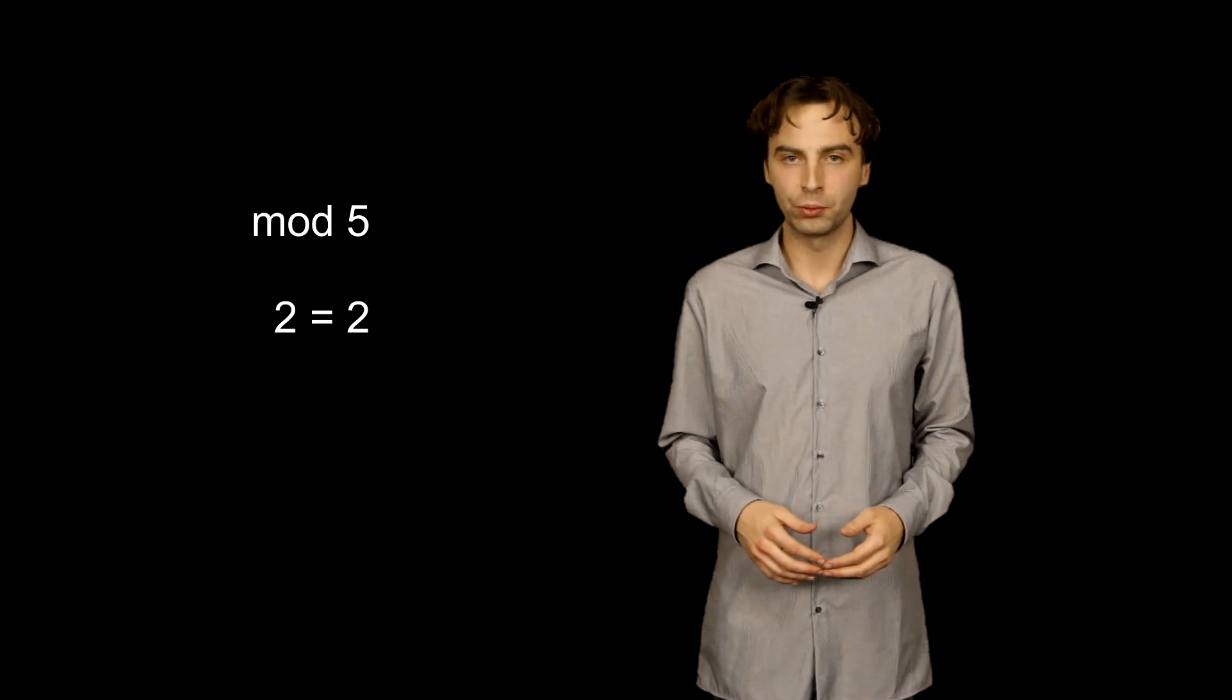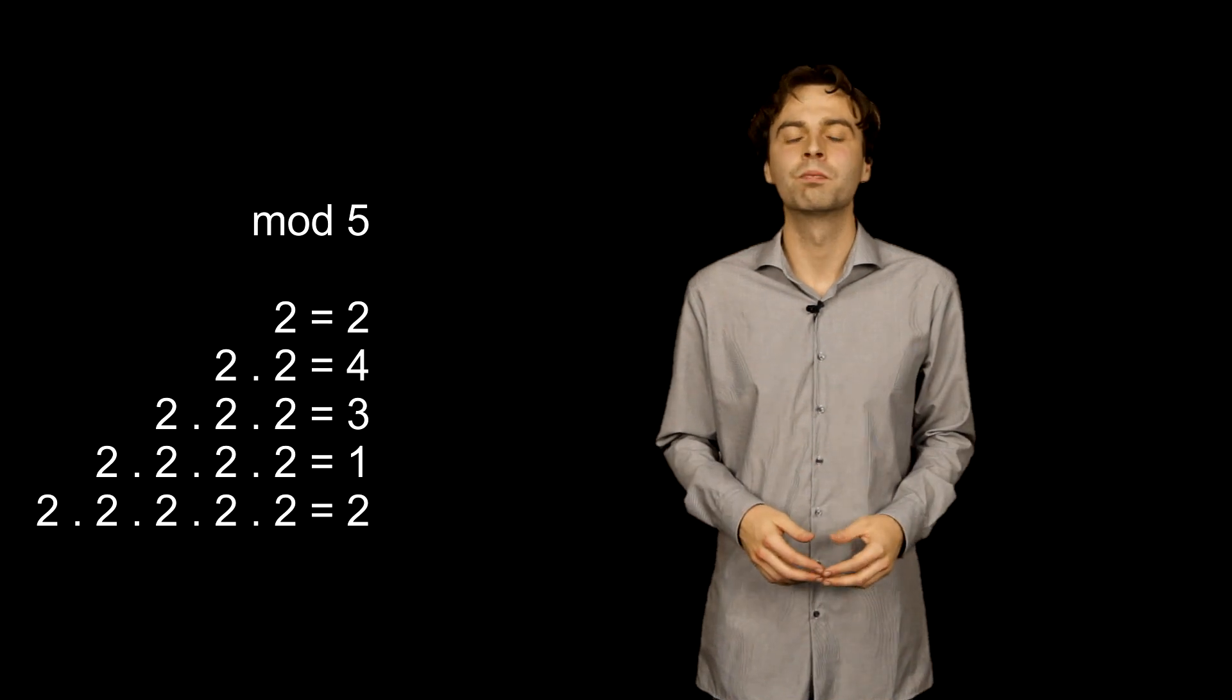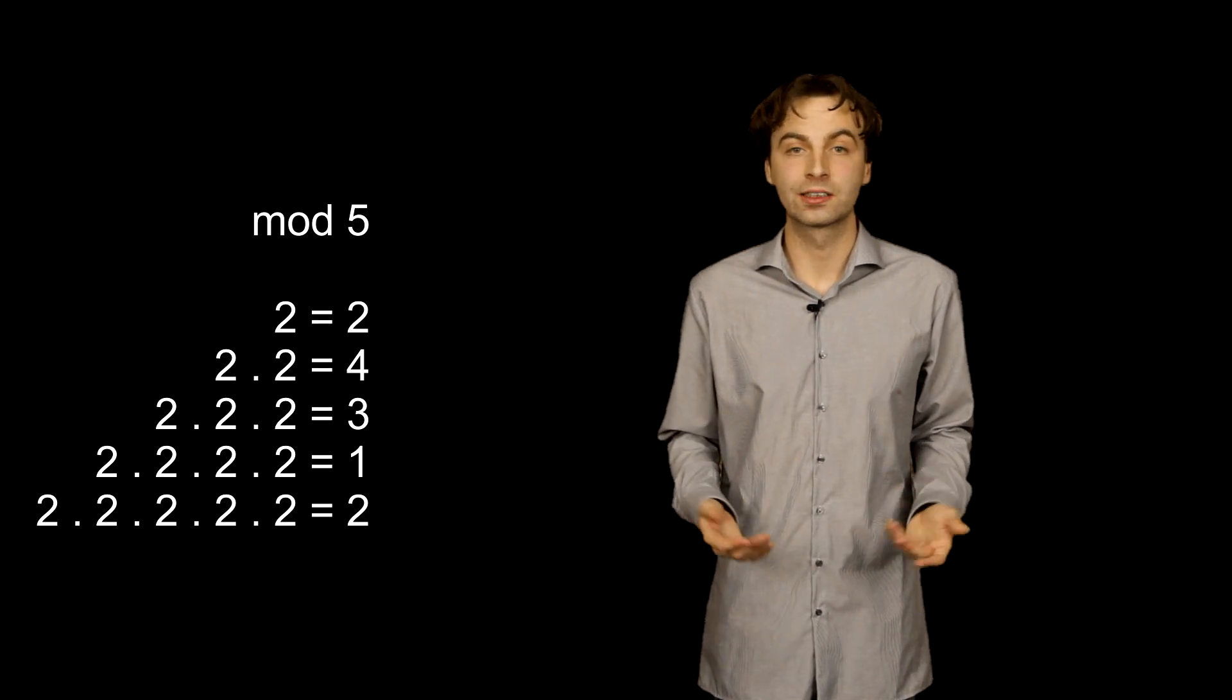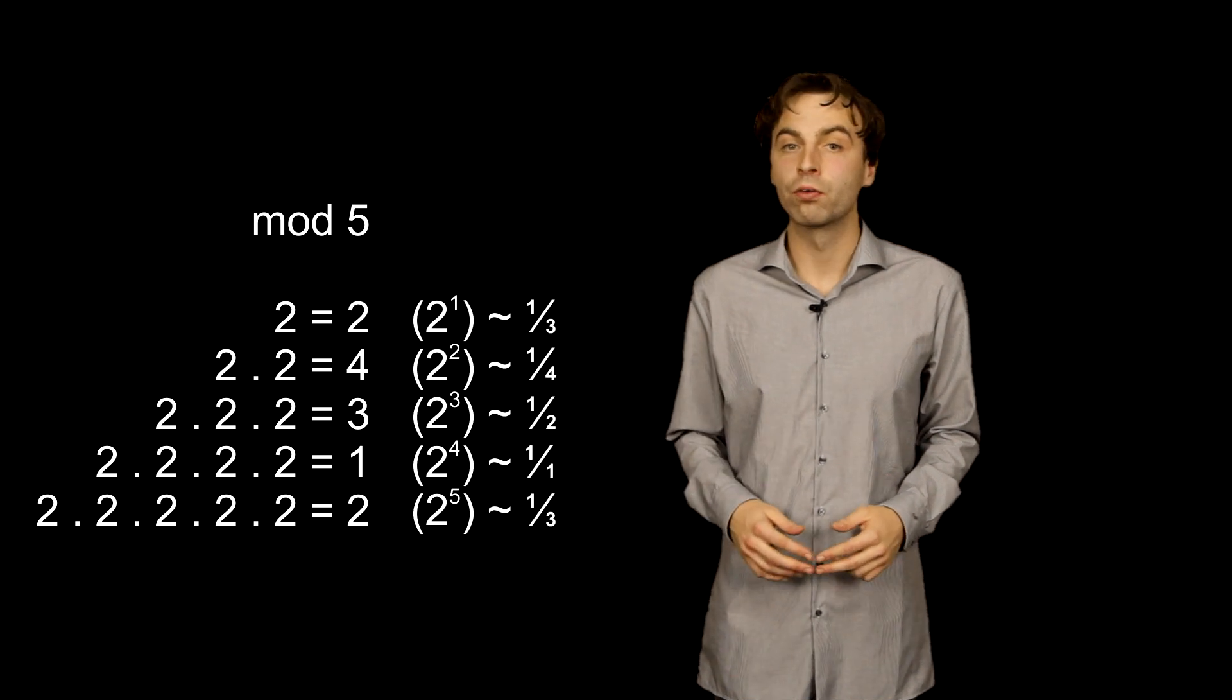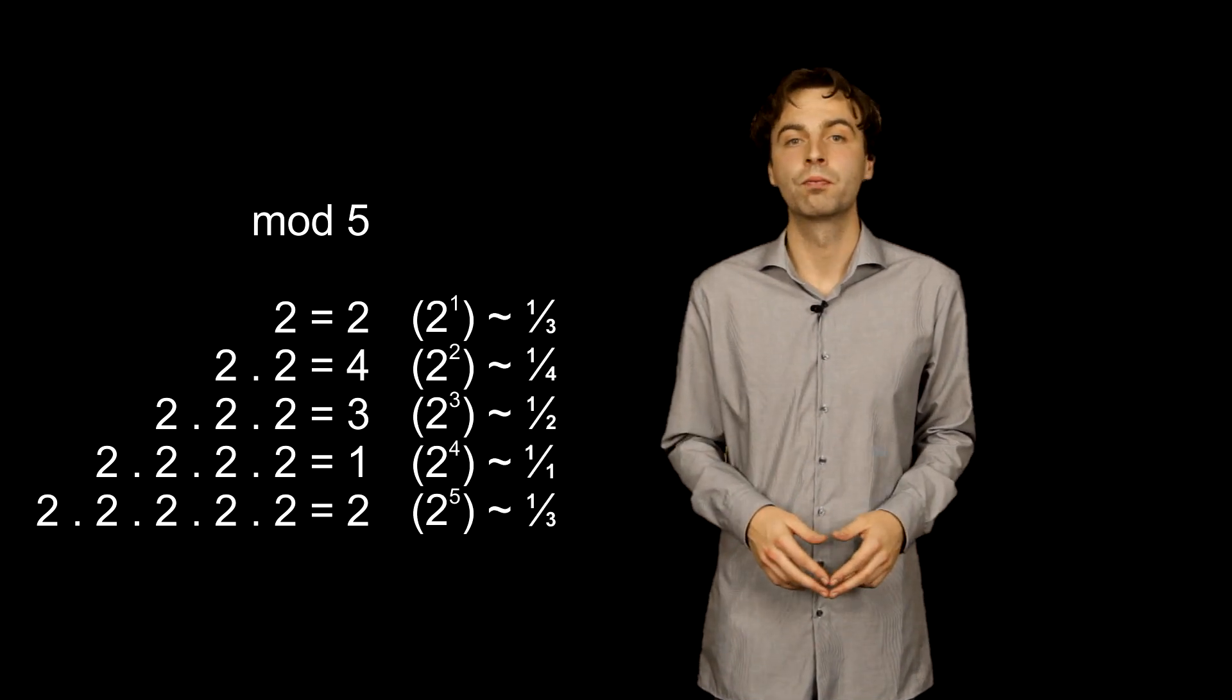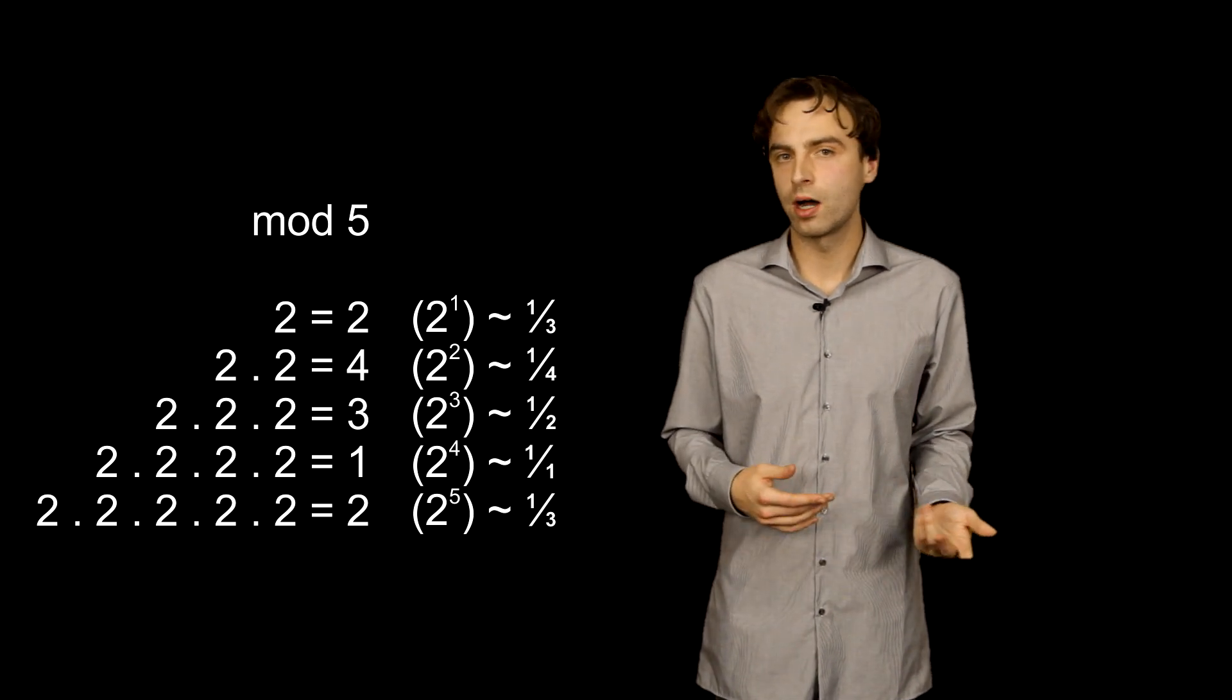We will multiply number 2 by itself, then we will do it again and again and again. Soon a pattern emerges. It is clear that there is a cycle. The fifth power of 2 equals the first power. The fourth power of 2 equals 1 and the third power equals 1 half.